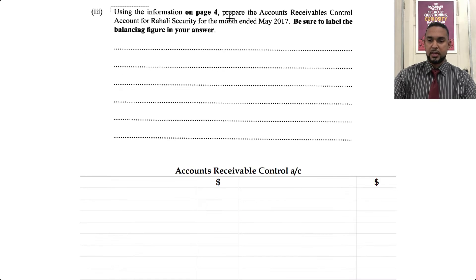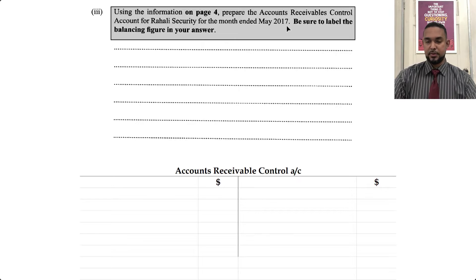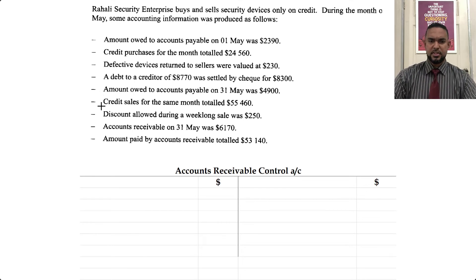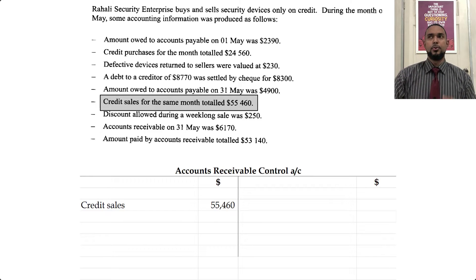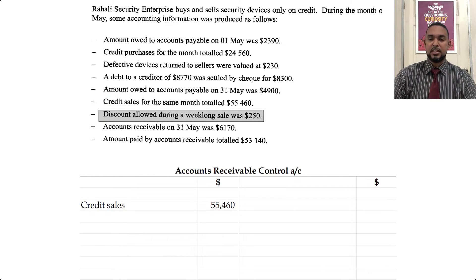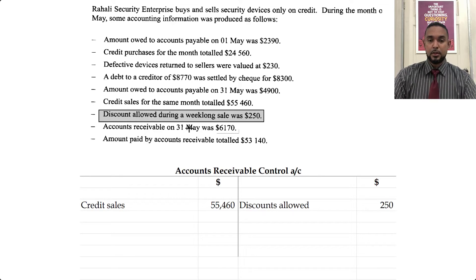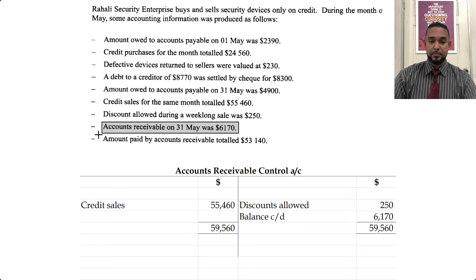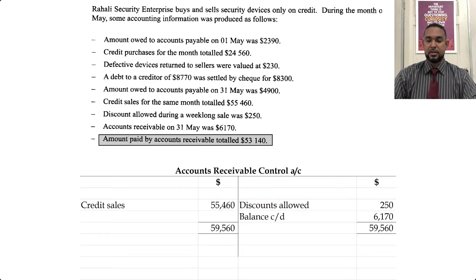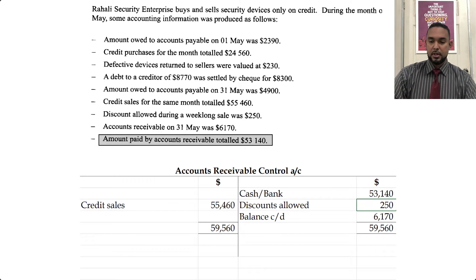Let's look at the debtors control account. They're asking us to do the accounts receivable control account for Rahali for the same month of May — be sure to label the balancing figure. When we went through the information, we didn't see an opening balance. We have credit sales for the month. Credit sales go on the debit side because when you sell on credit, your debtor owes you more money — that's an increase in your asset, which requires a debit. Next, discounts allowed — that decreases your asset, so it goes on the credit side. Amounts paid by accounts receivable — receipts from debtors — go on the credit side because when debtors pay you back, they reduce the amount they owe, and to reduce an asset you credit the asset account.